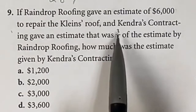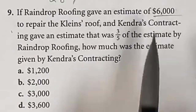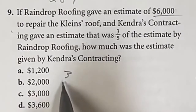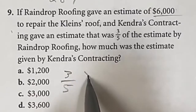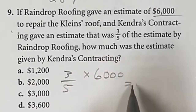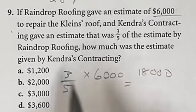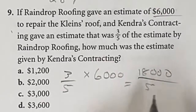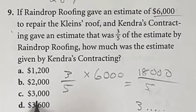For number 9 on the ASVAB, we have to find what 3/5 of a number is. To do that without a calculator, first multiply by the top of the fraction, then divide by the bottom. So 6,000 times 3 gives 18,000. Then divide by 5 — 5 goes into 18 three times with a little left over. Only one of the options has a 3 and some remainder, so your answer is D.